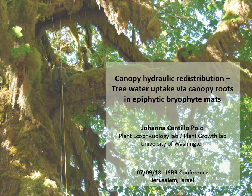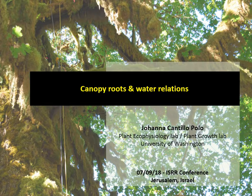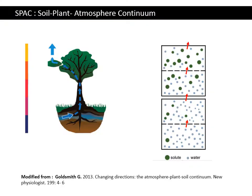My talk is on canopy hydraulic redistribution. I work with canopy roots — canopy roots and water relations. I'm going to start talking about this path, the soil-plant-atmospheric continuum. We are all familiar that water moves against gravity, thanks to the cohesion-tension theory, and moves because of the water pressure gradient.